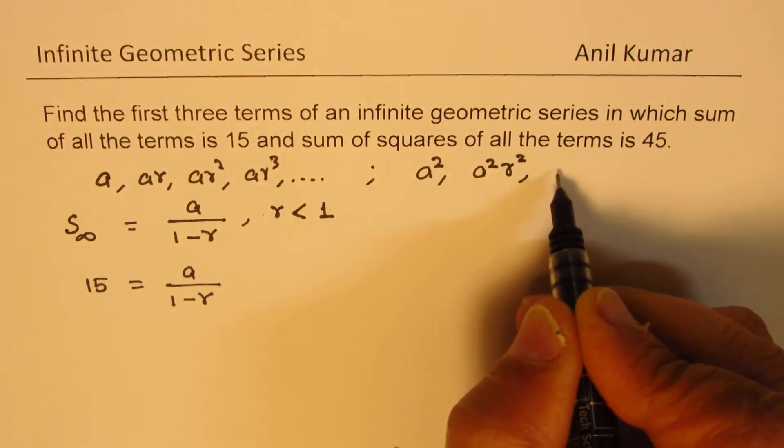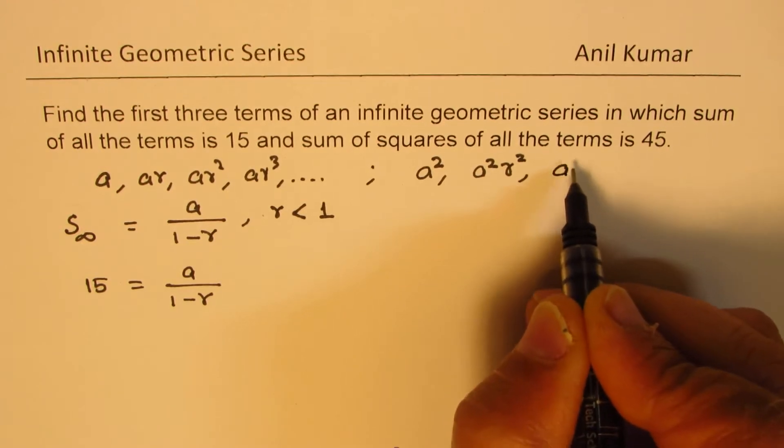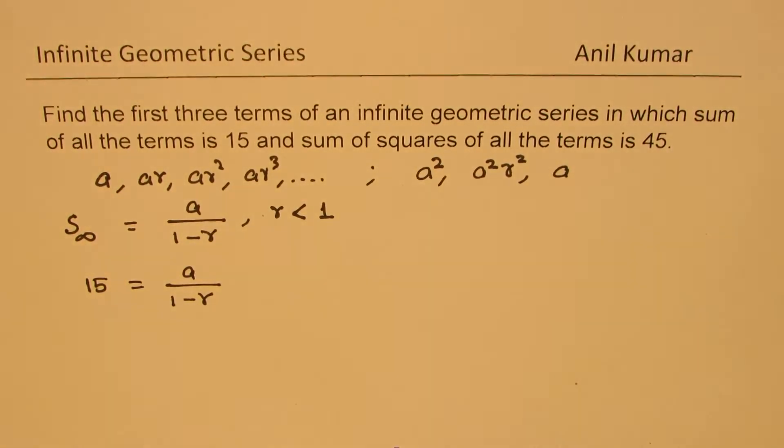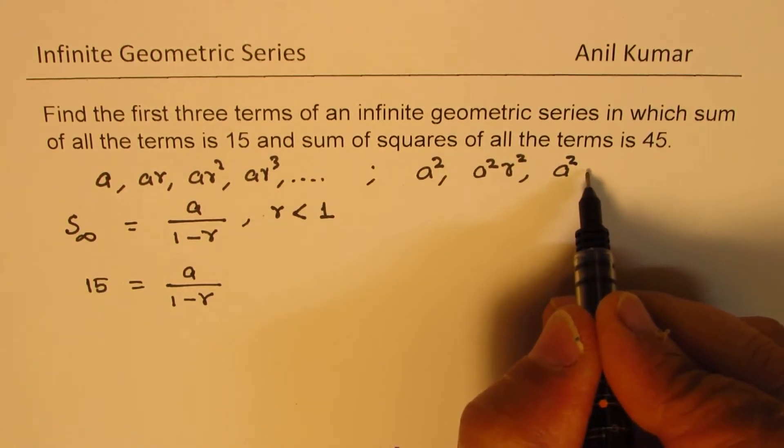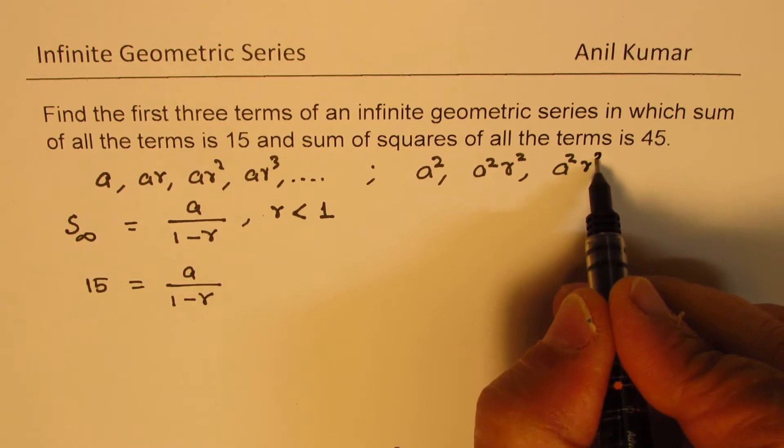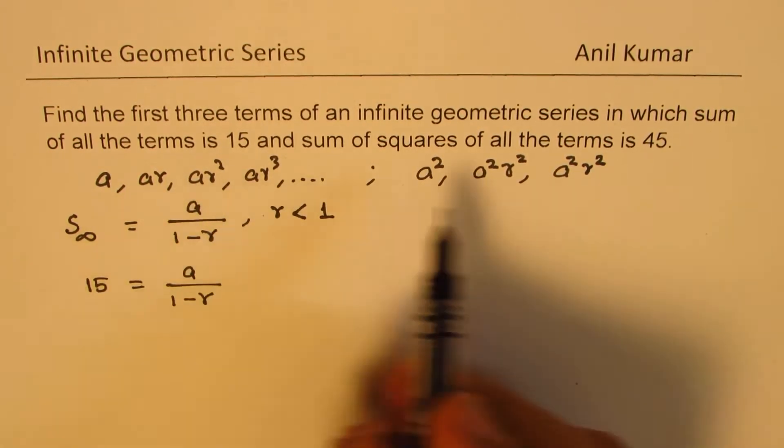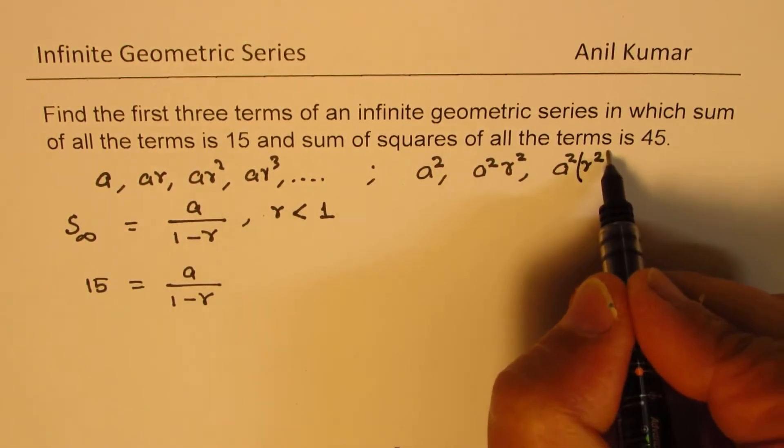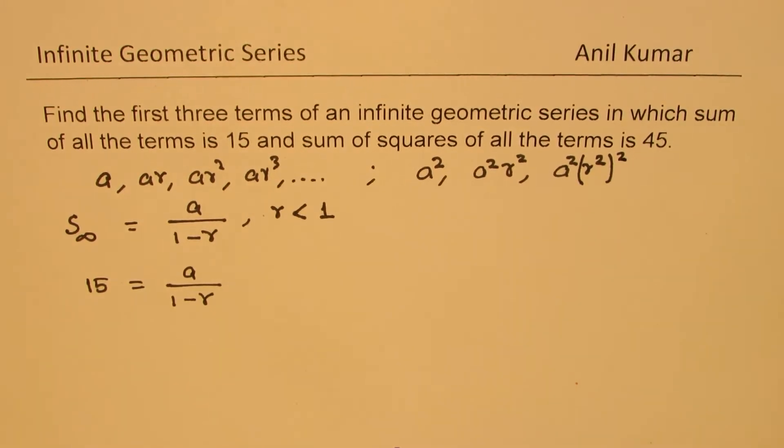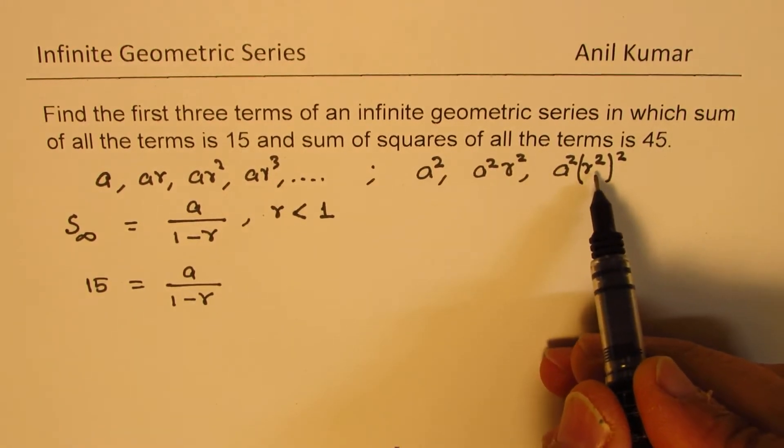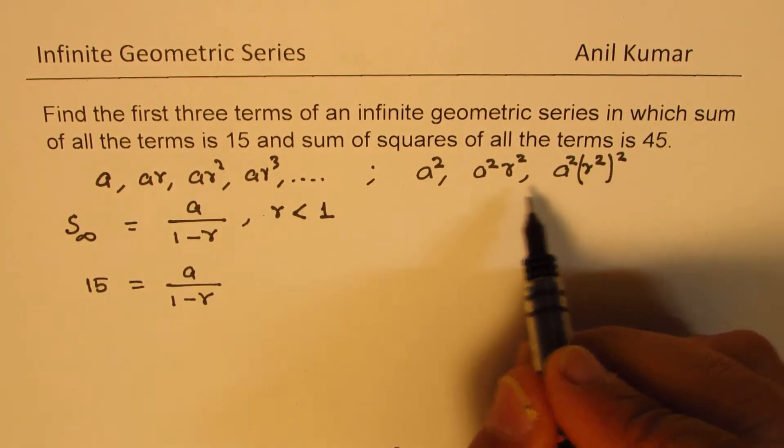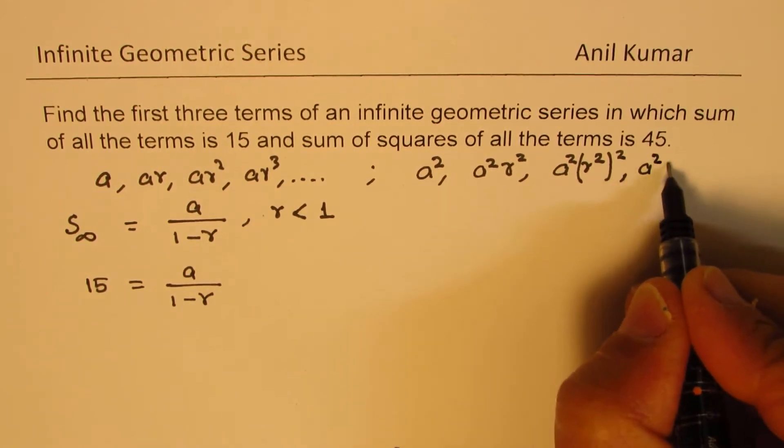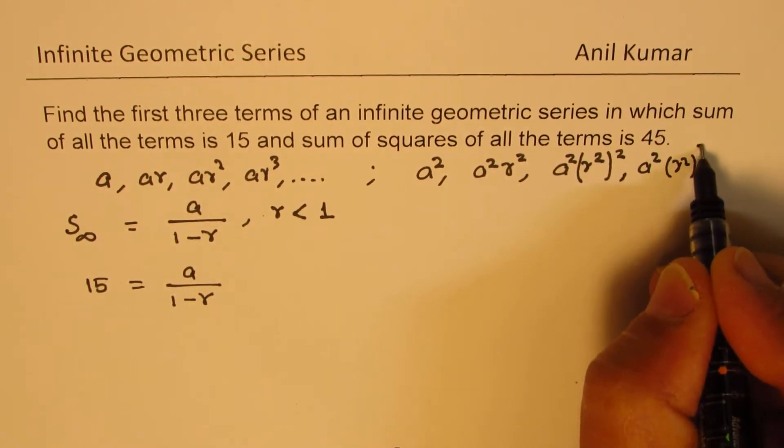And then think like this: A square is now your base, the first term, so it is A square. And this becomes R square, you're multiplying by R square. You get the idea. So the R value is R square. So that becomes the ratio of the consecutive terms.